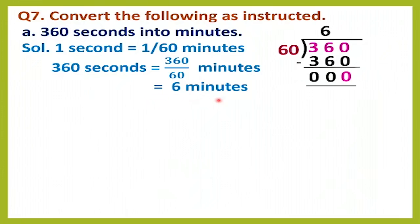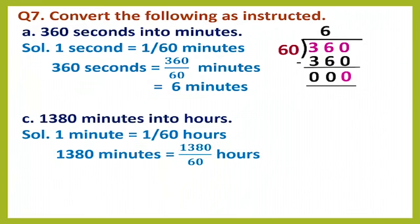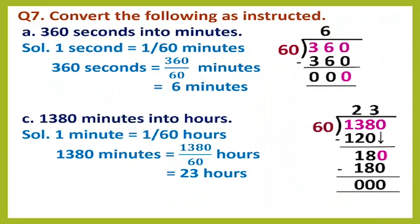Next, convert 1380 minutes into hours. One minute equals 1/60 hours, so 1380 minutes = 1380 ÷ 60 hours. Dividing: 60 × 2 = 120, subtract 120 from 138 to get 18, bring down 0 to make 180; 60 × 3 = 180. The quotient is 23, so 1380 minutes equals 23 hours.